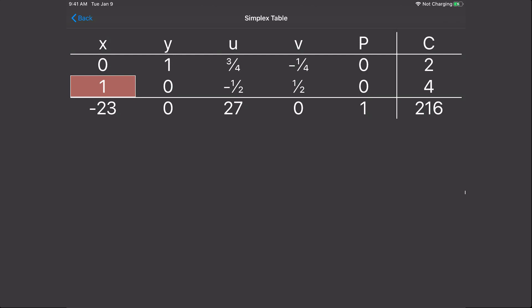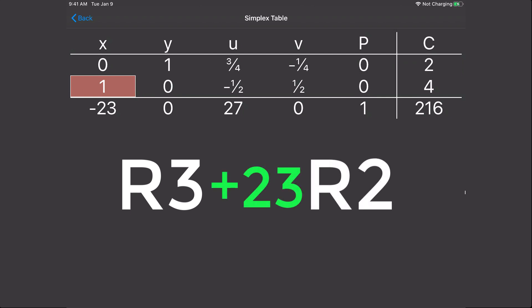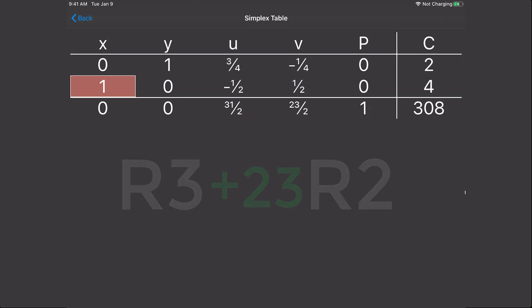Alright, now on to row 3. So what row do I want to change? What is our pivot row? And what cancels negative 23? So our bottom row is now 0, 0, 31 halves, 23 halves, 1, 308.